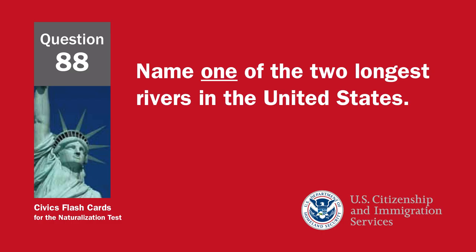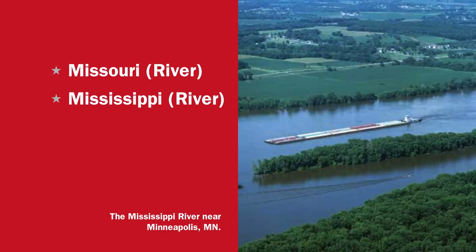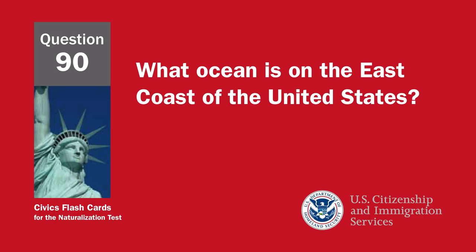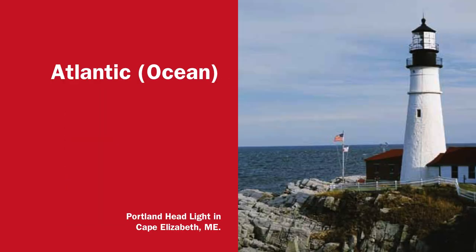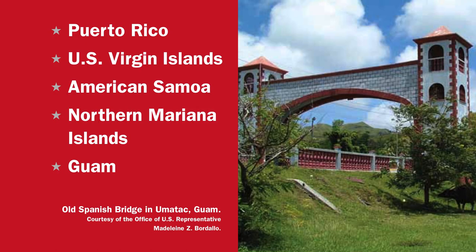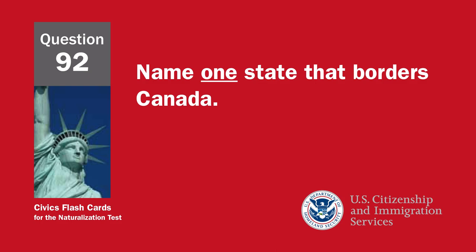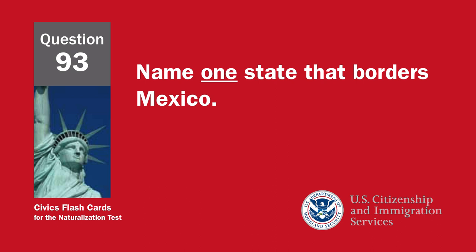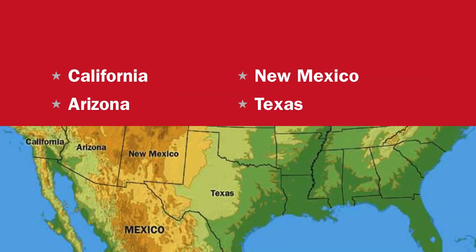Name one of the two longest rivers in the United States: Missouri River or Mississippi River. What ocean is on the west coast of the United States? Pacific Ocean. What ocean is on the east coast of the United States? Atlantic Ocean. Name one U.S. territory: Puerto Rico, U.S. Virgin Islands, American Samoa, Northern Mariana Islands, or Guam. Name one state that borders Canada: Maine, New Hampshire, Vermont, New York, Pennsylvania, Ohio, Michigan, Minnesota, North Dakota, Montana, Idaho, Washington, or Alaska. Name one state that borders Mexico: California, Arizona, New Mexico, or Texas.